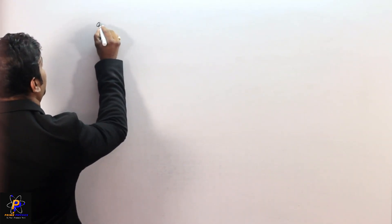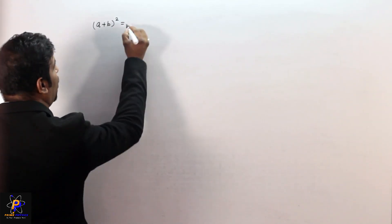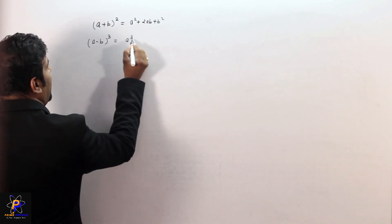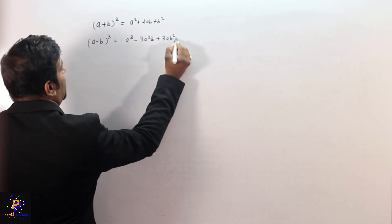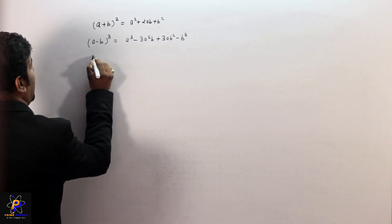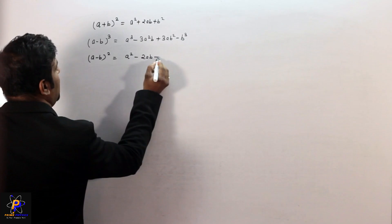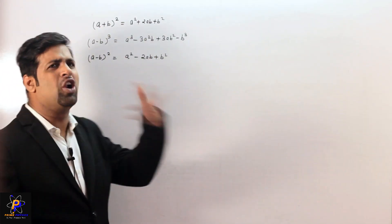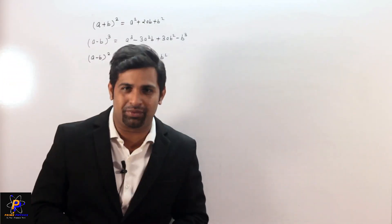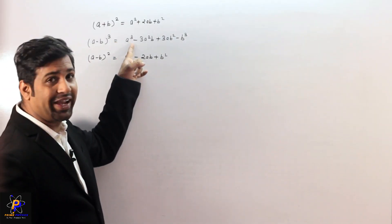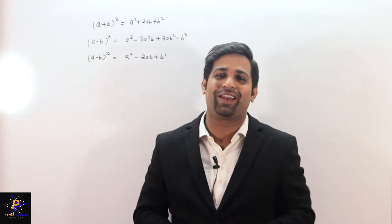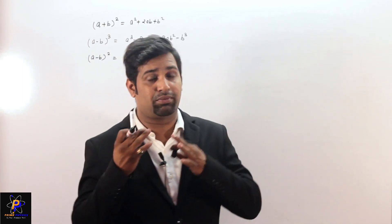It is quite easy, so let's revise the basic algebra from school level. Let me write (a+b) whole square — the formula is a² + 2ab + b². If I write (a−b) whole cube, the formula is a³ − 3a²b + 3ab² − b³. And (a−b) whole square is a² − 2ab + b². Remember: when the sign is plus, all terms are plus. When it is minus, alternate terms are negative — starting positive, then negative, then positive, then negative.